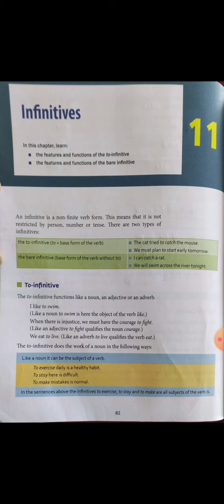Like a noun, the 'to' infinitive can be the subject of a verb. For example: 'To exercise daily is a healthy habit,' 'To stay here is difficult,' and 'To make a mistake is normal.' In these sentences, the infinitives 'to exercise,' 'to stay,' and 'to make' are all subjects of the verb 'is.'